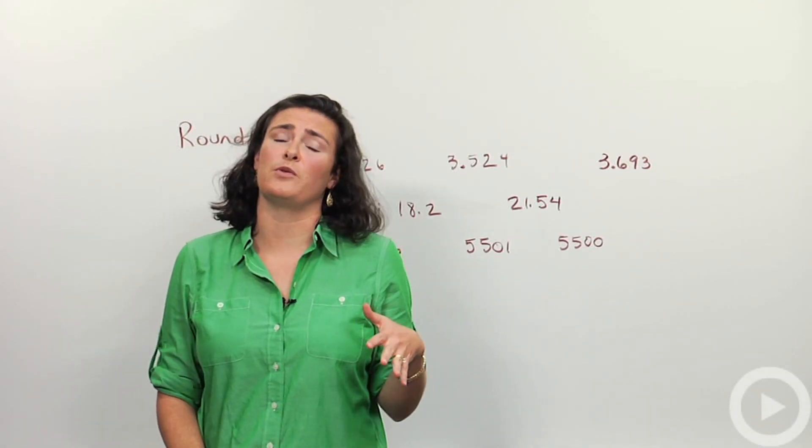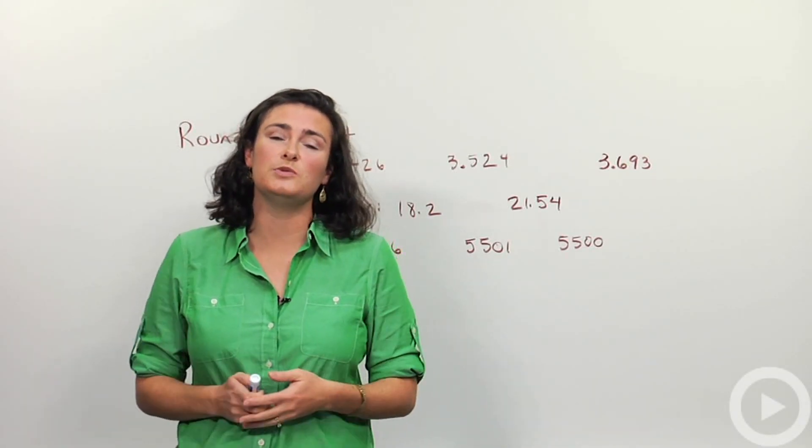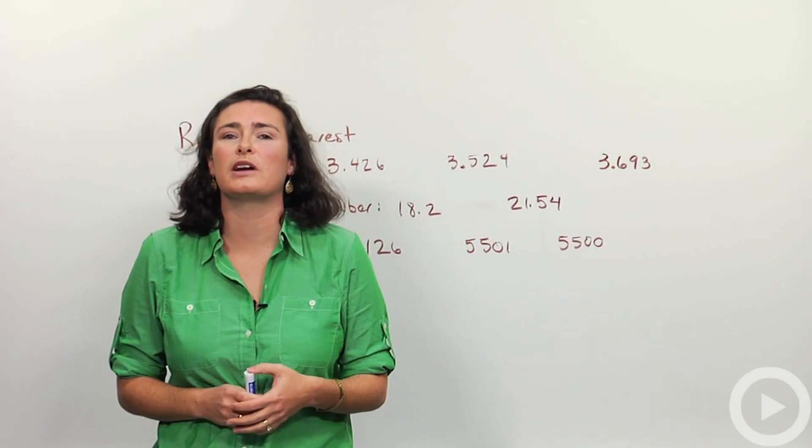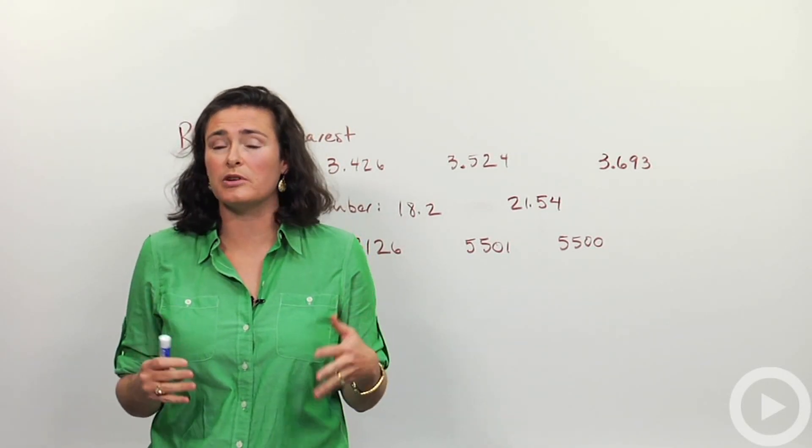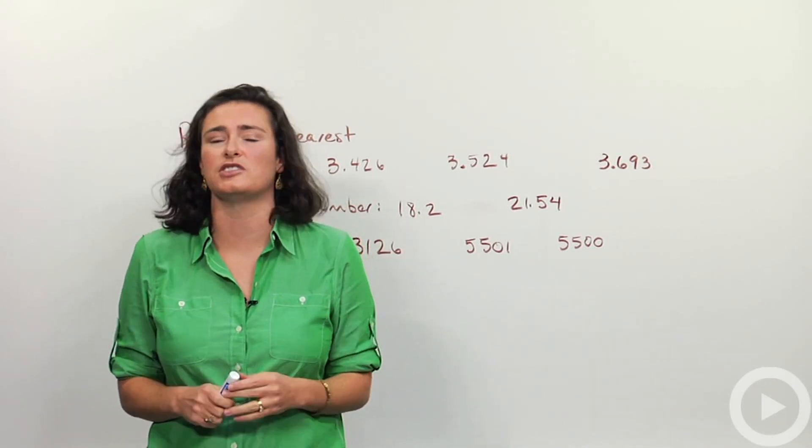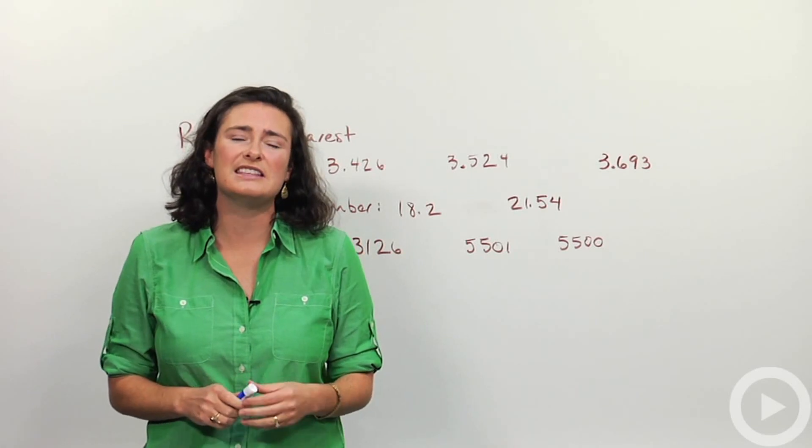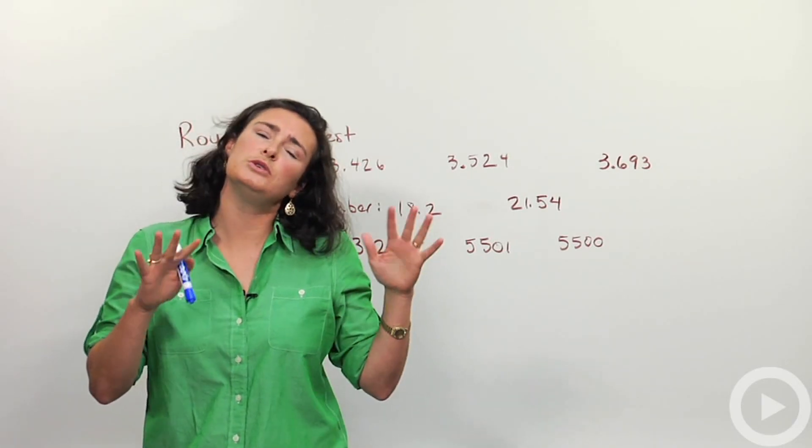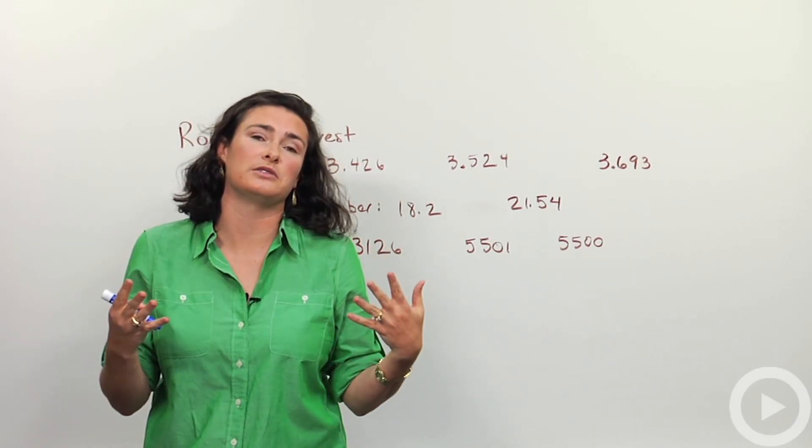A lot of times in math, especially if we want to do an approximation, we do what's called rounding. Rounding is where instead of using the actual number, the actual perhaps decimal or fraction or really big or really small number, instead of using the actual number, we do an approximation. And that's called rounding.